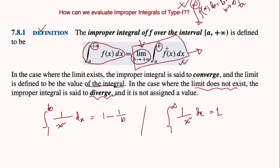To summarize: replace infinity by a finite number b to make the improper integral a proper integral. Evaluate this proper integral, then put the limit — replace b by infinity. If this limit exists, it is defined to be the value of the integral. If the limit does not exist, the integral diverges and has no value.